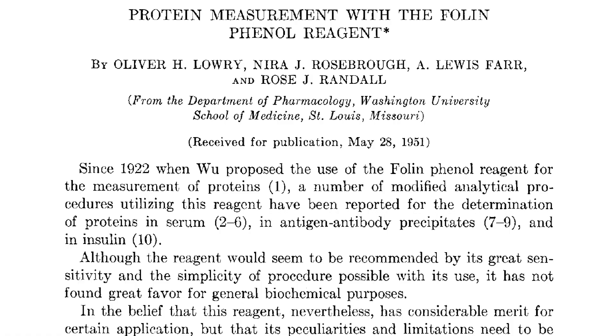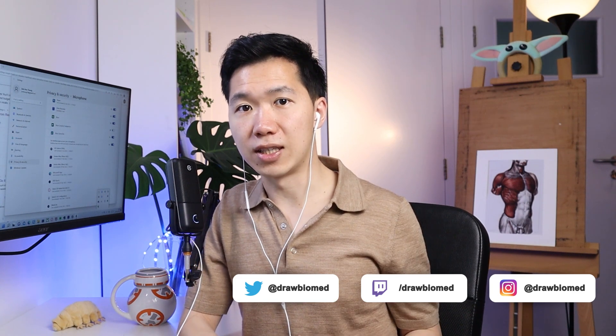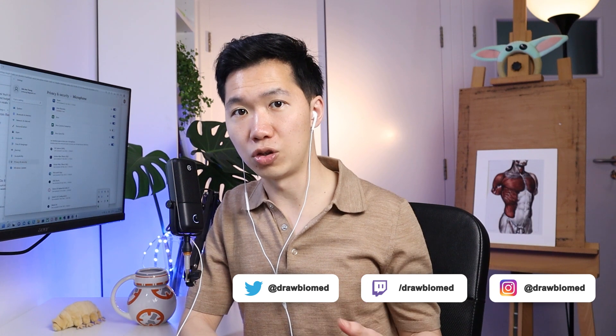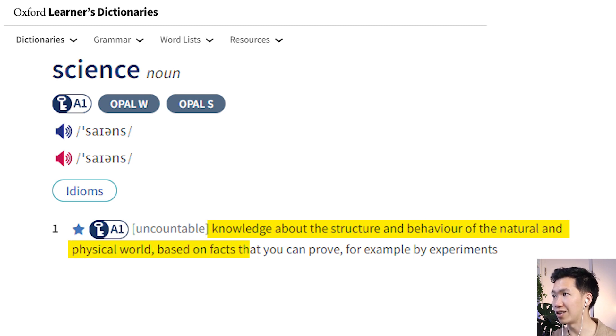A citation is created whenever an author references part of their new paper to an existing publication with the existing theory, discovery, or methodology. The purpose of this process is to guarantee that the new argument you're building in your paper is based on facts. Because science is — I'm going to read this from my reference — the knowledge about the structure and behavior of the natural and physical world based on facts that you can prove, for example by experiments. Here I cite the Oxford Advanced Learner's Dictionary, so you know this definition is based on a credible reference.